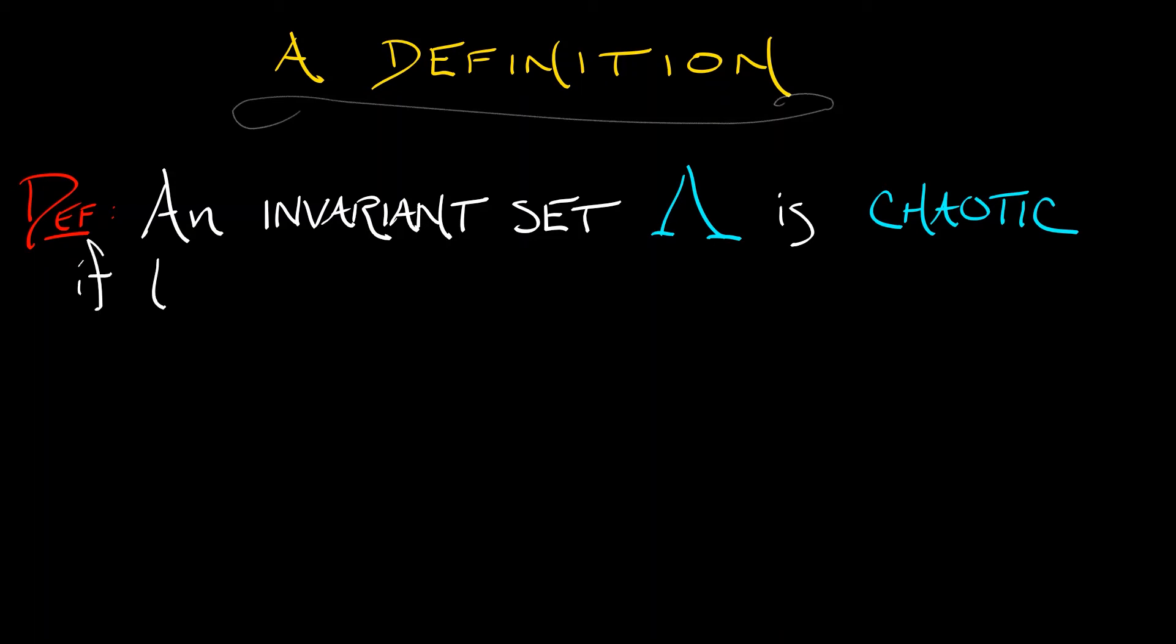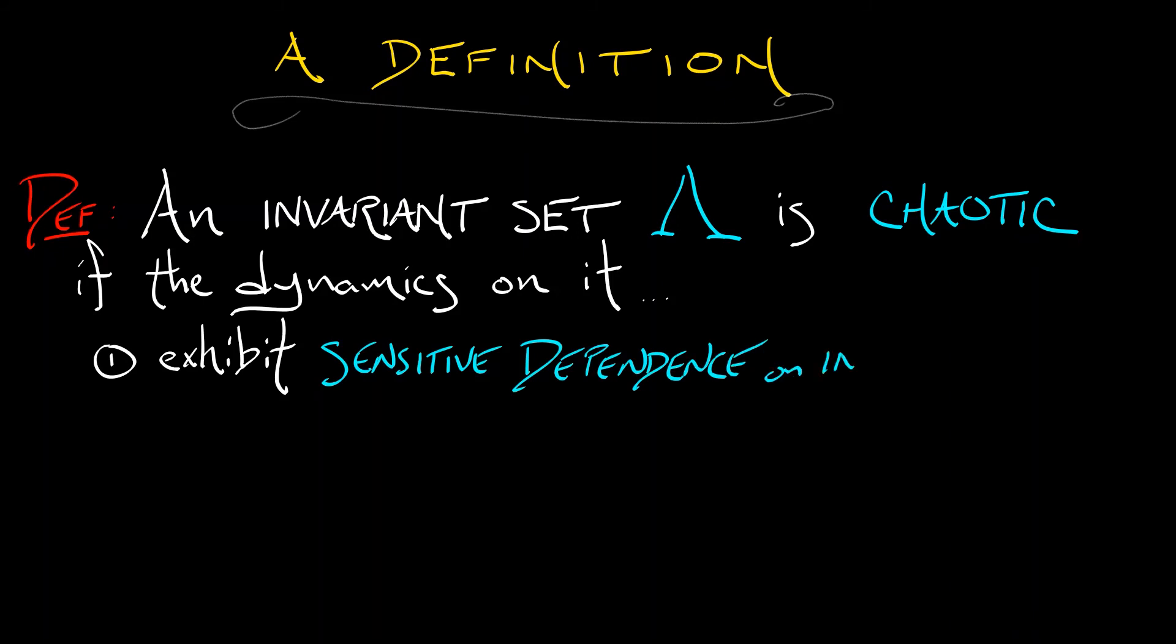If the dynamics on it satisfies three conditions. First of all, it has to exhibit sensitive dependence on initial conditions. I'm not going to define what that is, but we've seen an example of that. If you start off with initial conditions that are as close as you want, eventually they get uncorrelated.